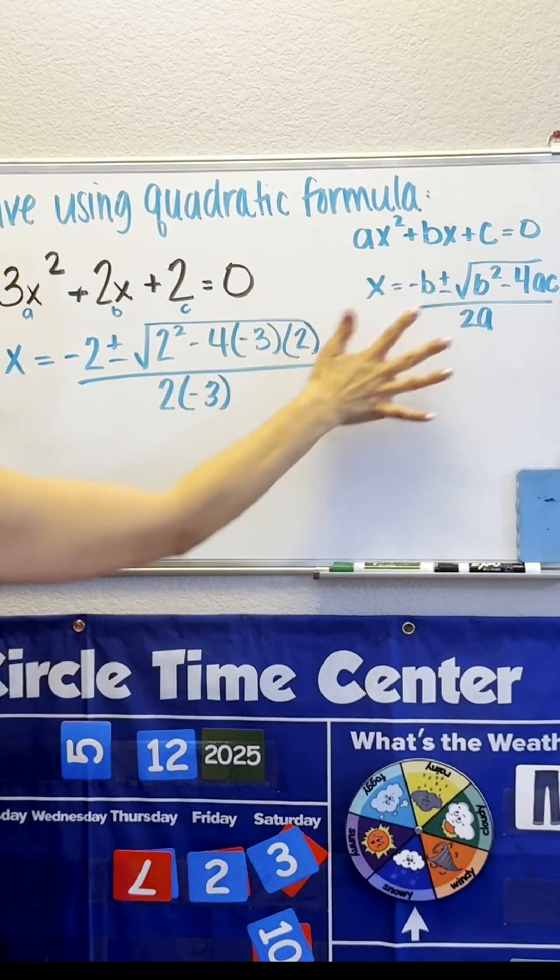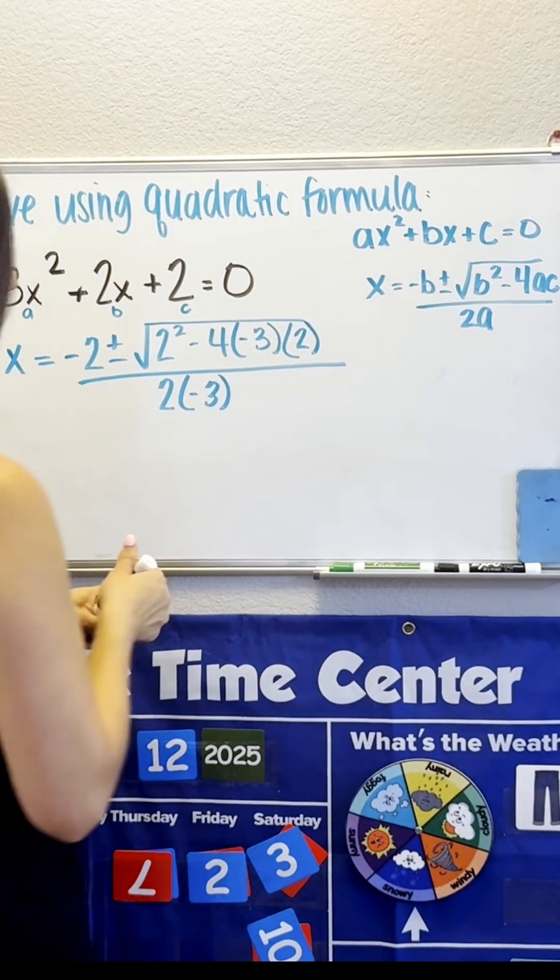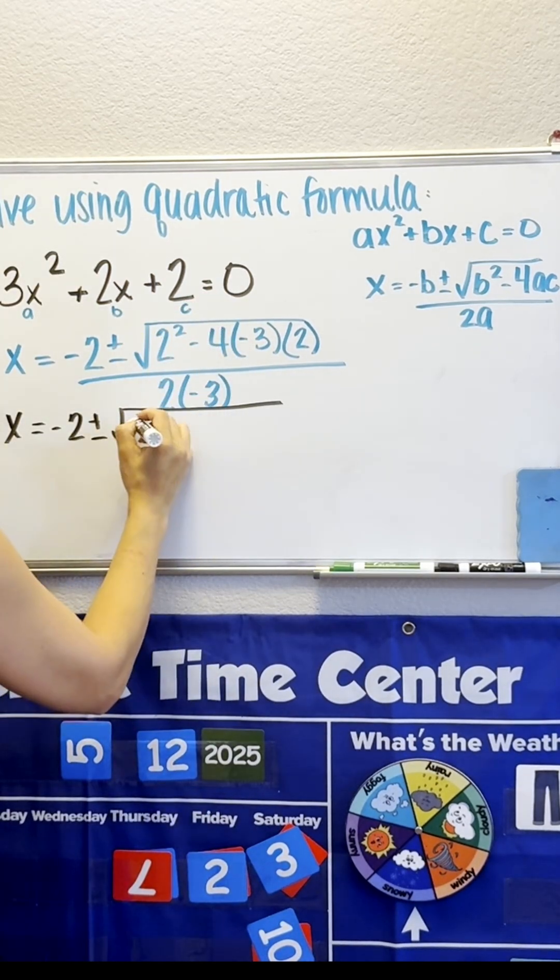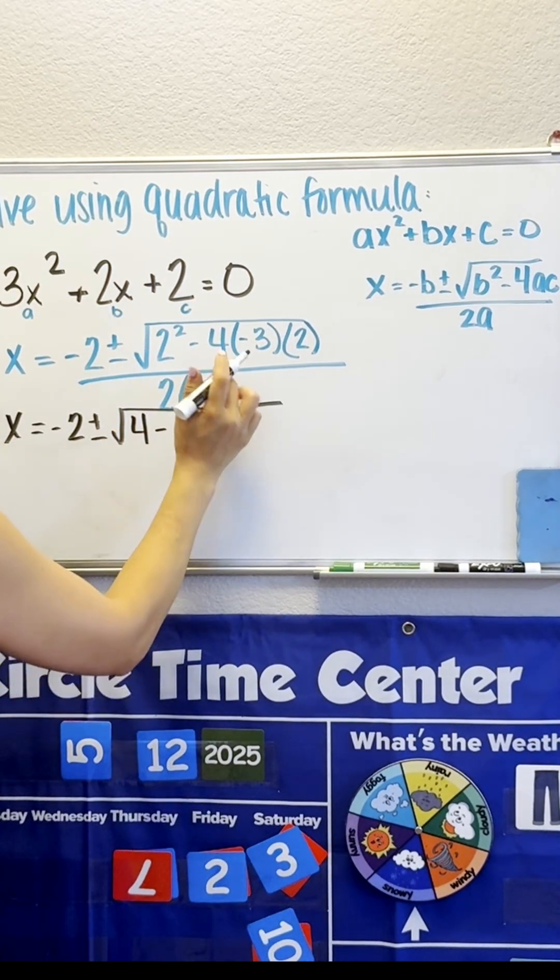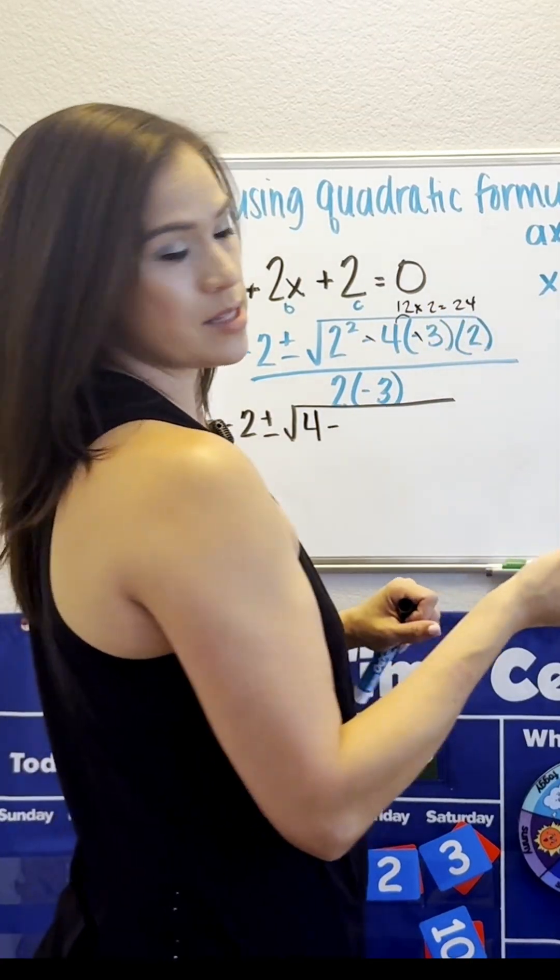And now that we have everything plugged in, we will go ahead and solve for X. 2 squared, so 2 times 2, which is 4. Minus, so now 4 times 3 times 2 is giving us positive 24.